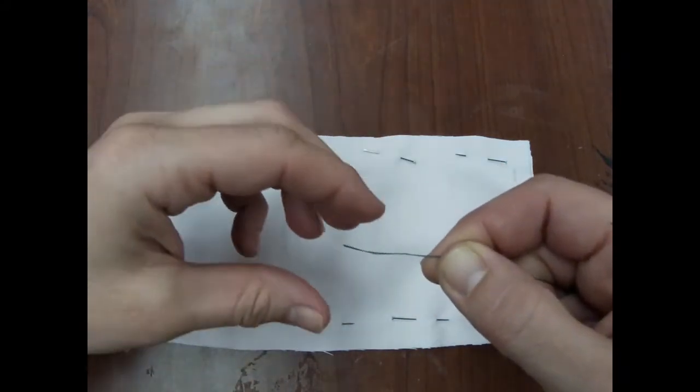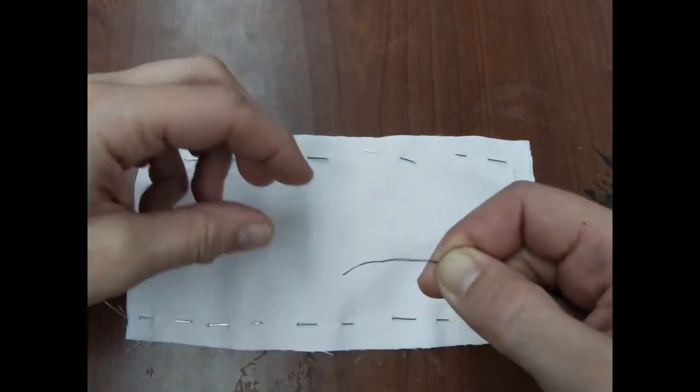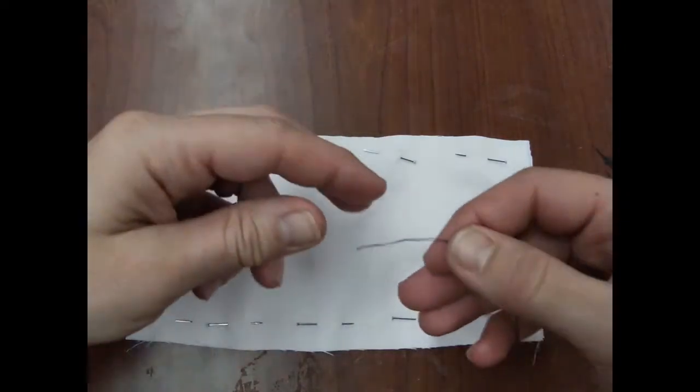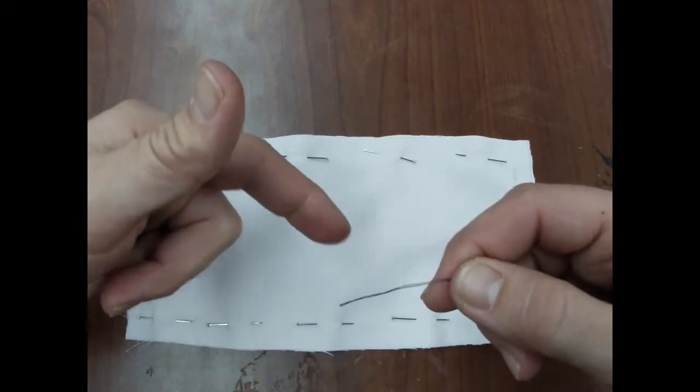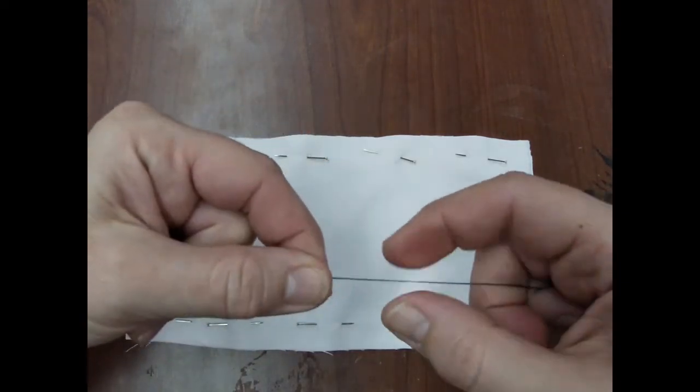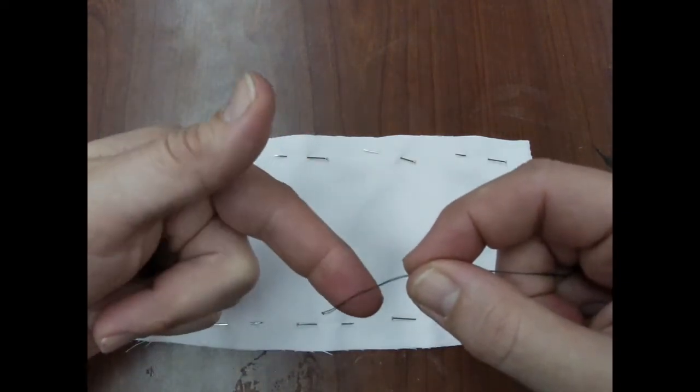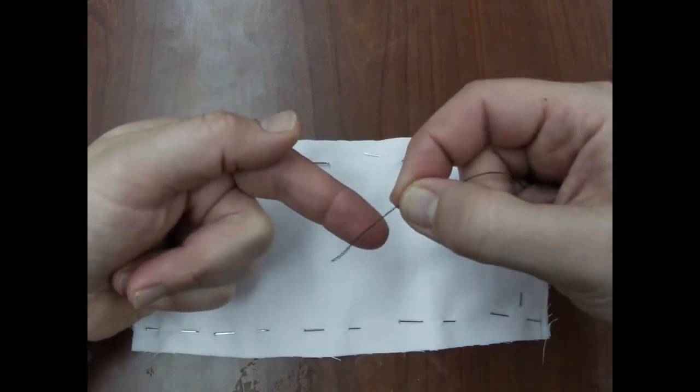Now we need a knot here. Otherwise, when we are sewing, it's going to just come right through. So here's what I find to be the best way to tie a knot at the end of the thread. There are many ways to do this. Try this one first.